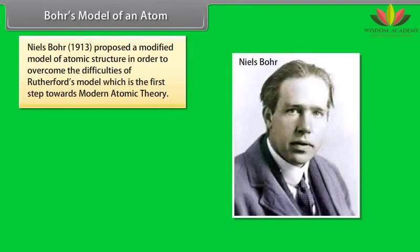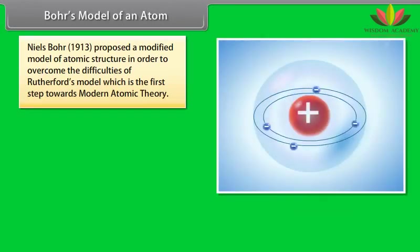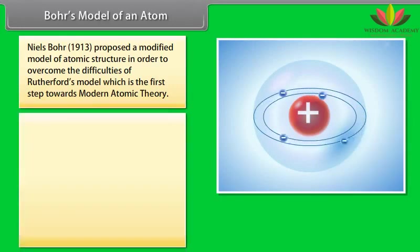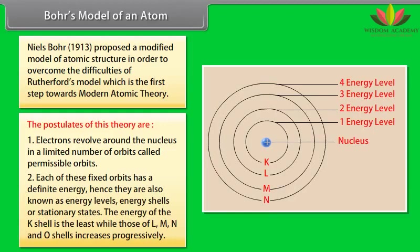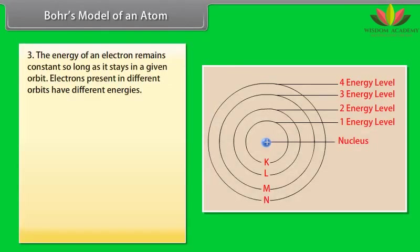Bohr's Model of an Atom. Niels Bohr, 1913, proposed a modified model of atomic structure in order to overcome the difficulties of Rutherford's model which is the first step towards modern atomic theory. The postulates of this theory are: Electrons revolve around the nucleus in a limited number of orbits called permissible orbits. Each of these fixed orbits has a definite energy, hence they are also known as energy levels, energy shells or stationary states. The energy of the K shell is the least, while those of L, M, N and O shells increases progressively. The energy of an electron remains constant so long as it stays in a given orbit. Electrons present in different orbits have different energies.